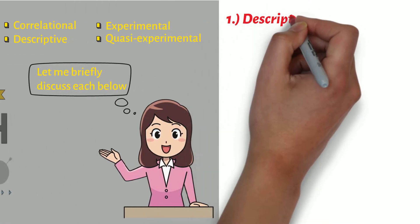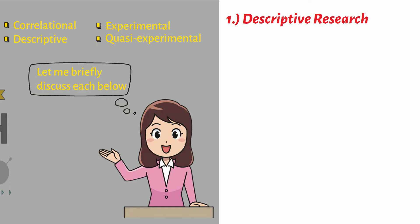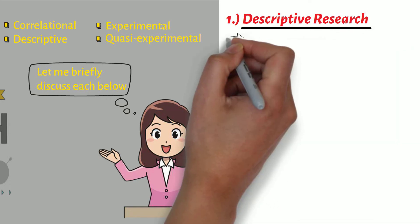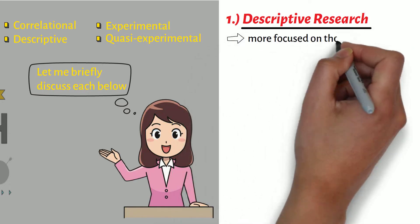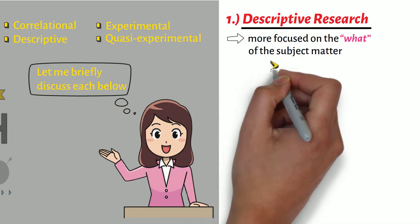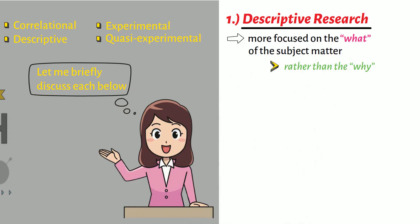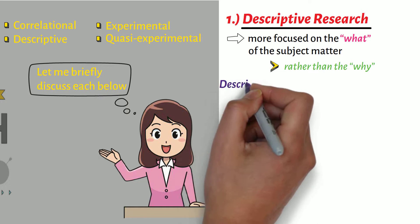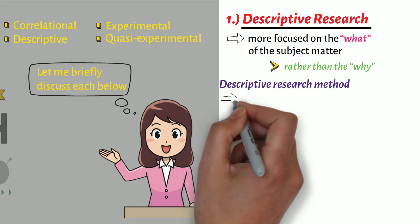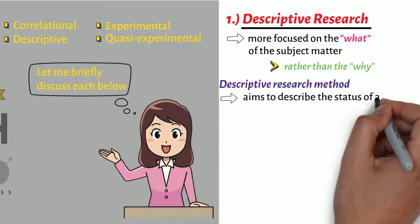First, on descriptive research. Descriptive research method is more focused on the what of the subject matter rather than the why. In other words, descriptive research method aims to describe the status of a variable or phenomenon.